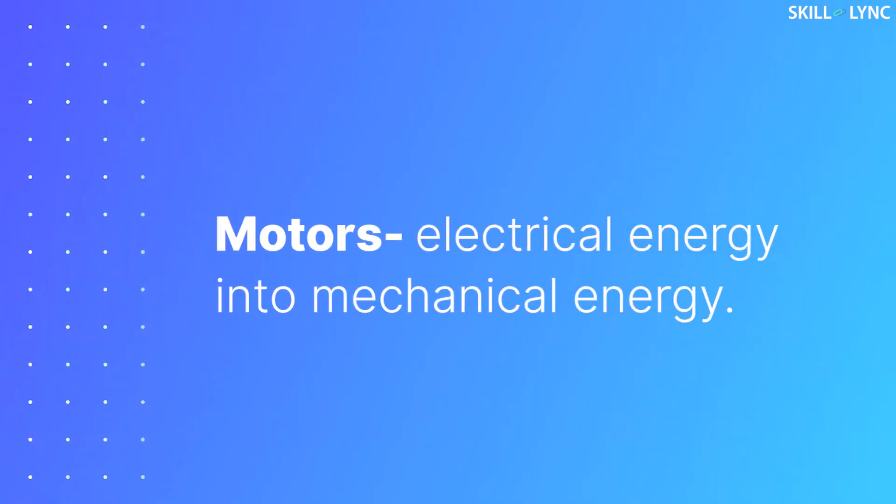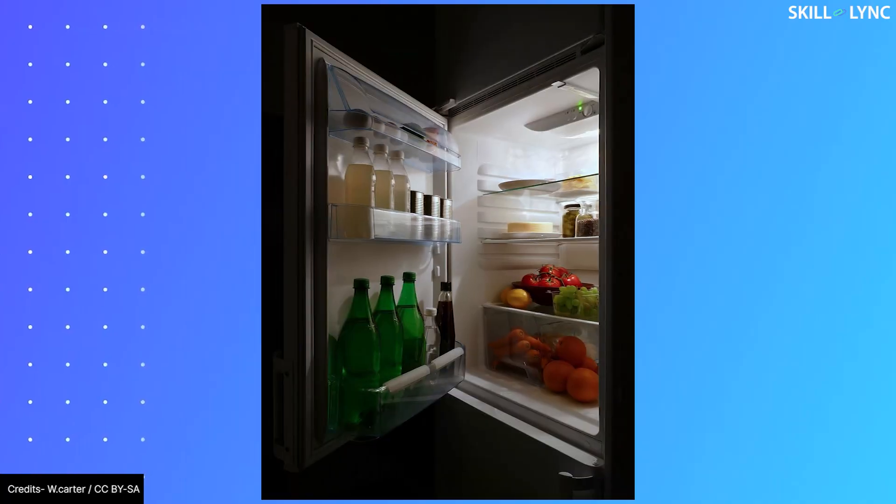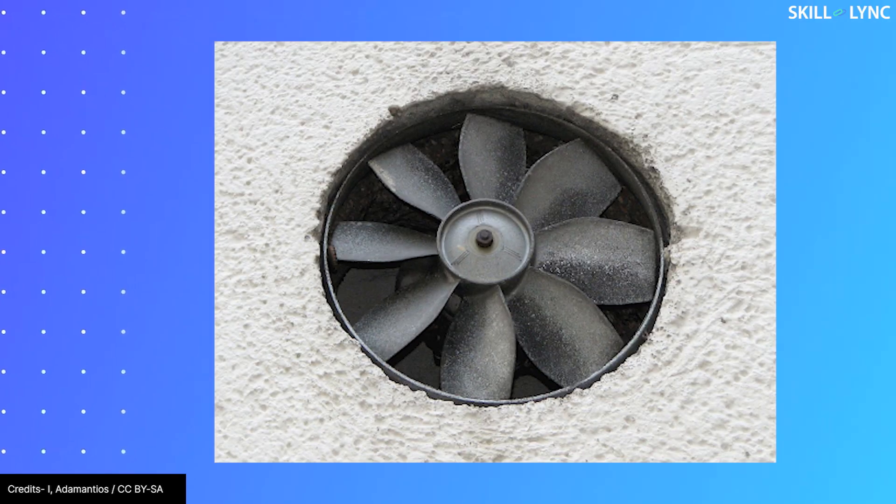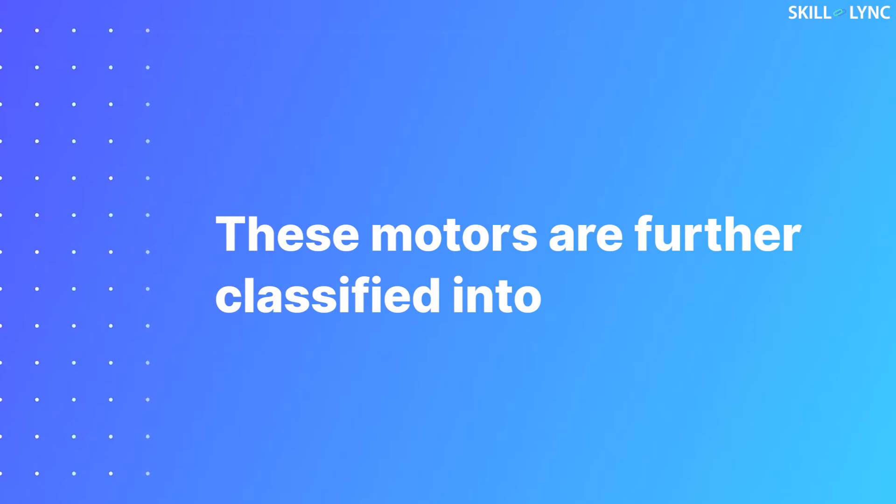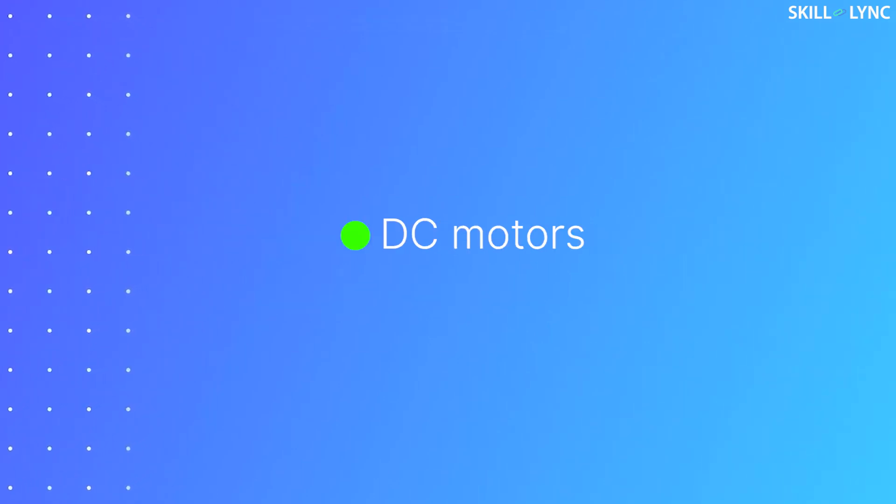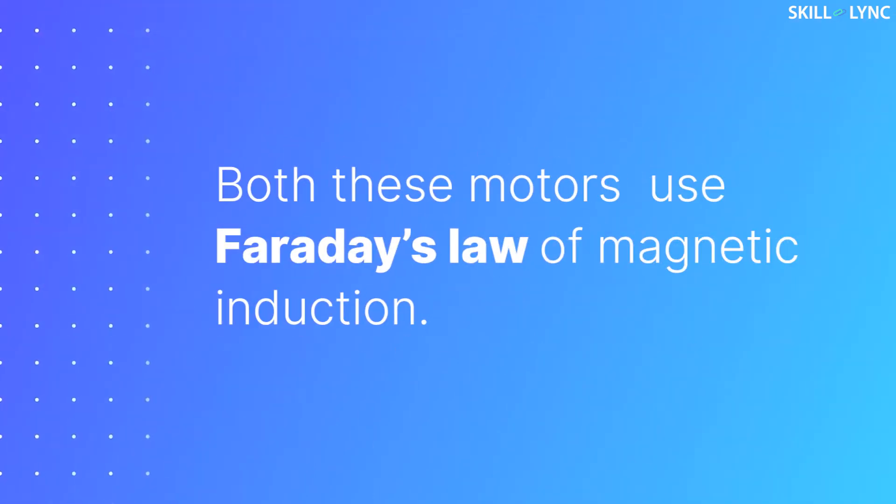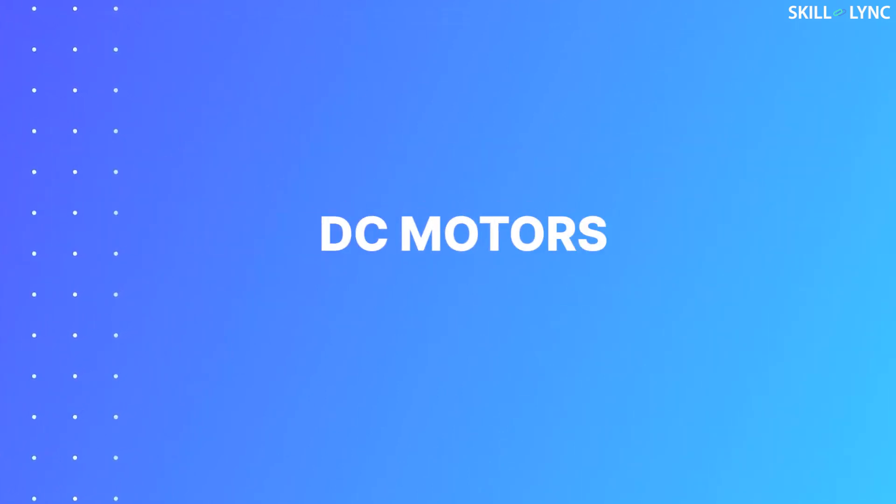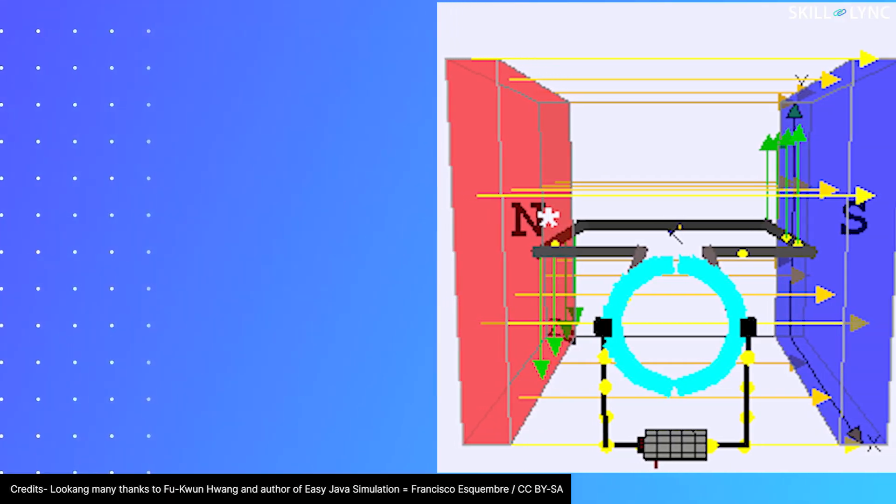Next we have motors. Motors are the machines that convert electrical energy into mechanical energy. Our washing machines, refrigerators, exhaust fans, etc. have motors in them. These motors are further classified into DC motors and AC motors. Both these motors use Faraday's law of magnetic induction. First let's discuss DC motors.